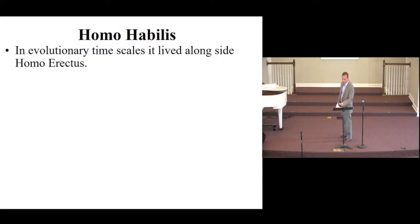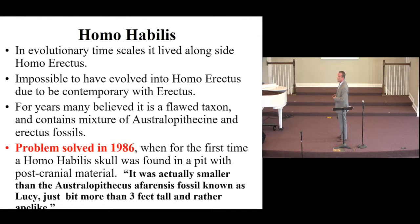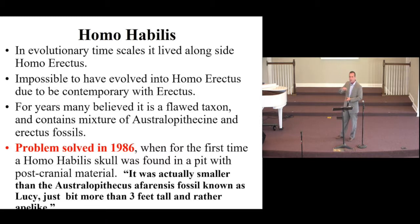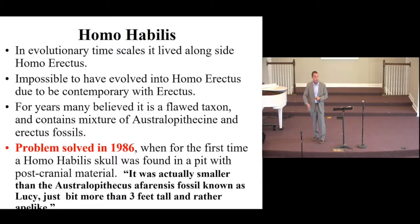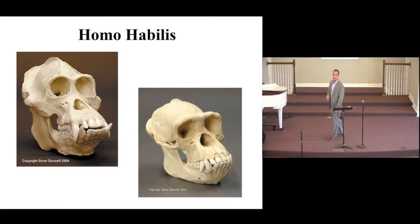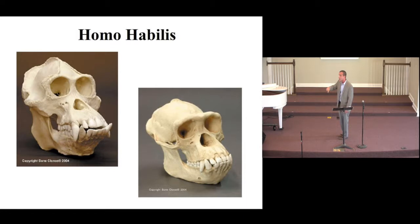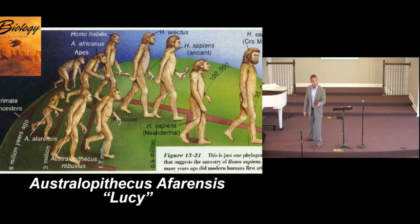Next: Homo habilis, discovered in 1959, dated 2.5 million to 1.4 million years old — living alongside Homo erectus, which we've already sunk into modern humans. For years there was conflicting information in the taxon. Until 1986, when for the first time a Homo habilis skull was found in a pit with post-cranial material — all pieces together. He was small, with a chimpanzee skullcap. Homo habilis is not in the human lineage; Homo habilis is in the chimpanzee lineage. He's alongside Australopithecus afarensis — he is a monkey. Absolutely not Homo, absolutely Australopithecine.